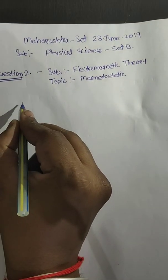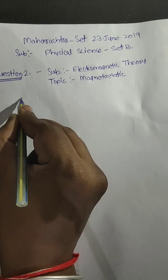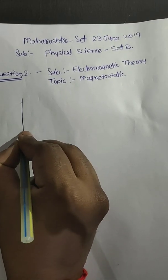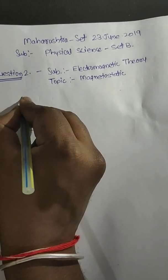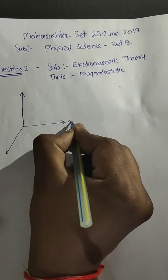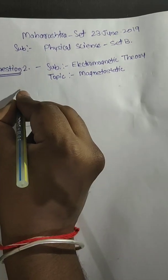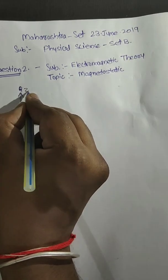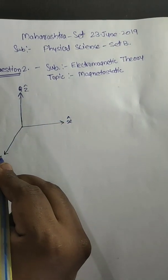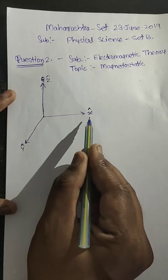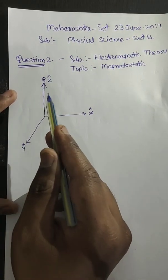Now let us draw a diagram. Suppose we have this is x cap direction, this is y cap direction, and this is z cap direction.